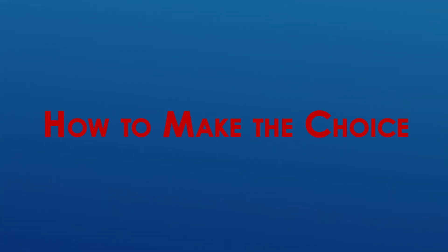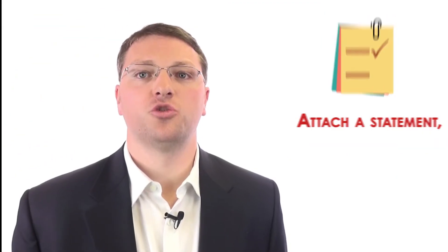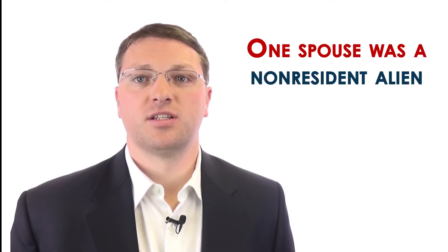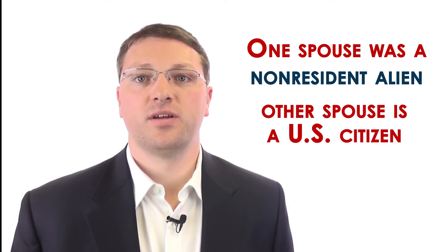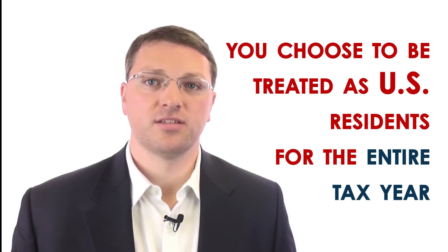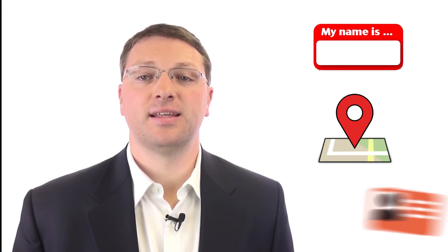How to make the choice. Attach a statement signed by both spouses to your joint return for the first tax year for which the choice applies. It should contain the following information. A declaration that one spouse was a non-resident alien and the other spouse is a U.S. citizen or resident alien on the last day of your tax year and that you choose to be treated as U.S. residents for the entire tax year. The name, address, and identification number of each spouse. If one spouse died, include the name and address of the person making the choice for the deceased spouse.